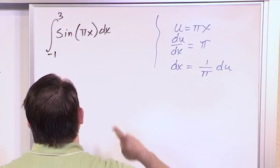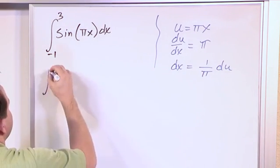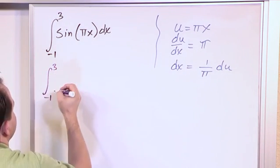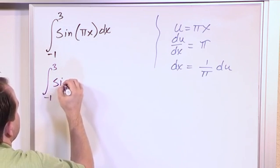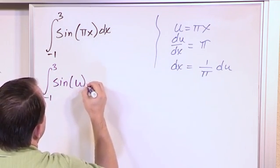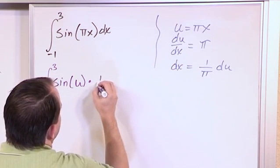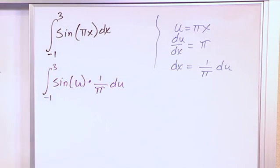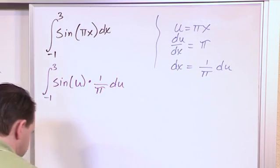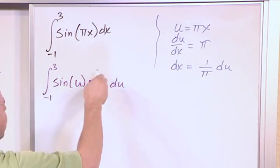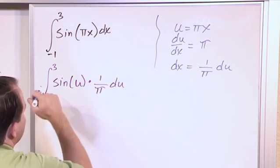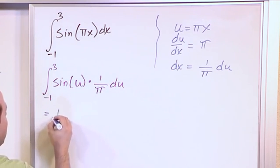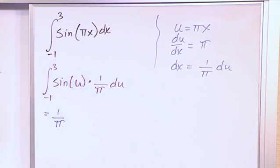So when we stick all this stuff in here, hopefully we get an integral that we know how to solve. So -1 to 3 of sine of u, dx is equal to 1 over pi du. So everything's in terms of u and du, which is exactly what we want to see. This 1 over pi doesn't matter at all because it can come out of the integral. So what happens is we have 1 over pi. What is the integral of sine?